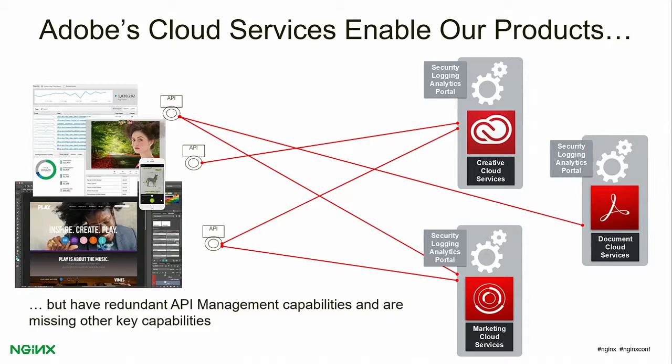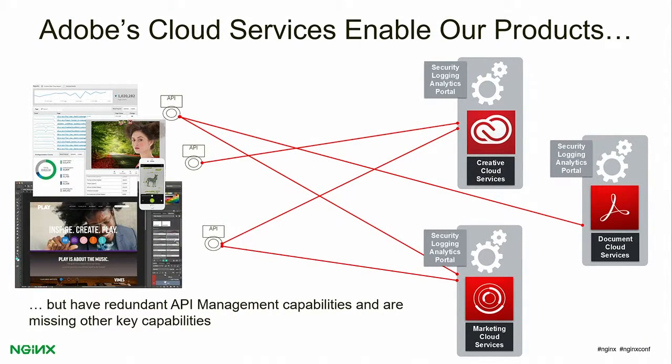My point in showing that video was not to show Photoshop Mix per se, but to show that when you saw it uploading to the cloud, rendering the image and coming back to the user, those are actually API calls that are exposed and managed through our API gateway. That's the value we in the platform enable to our product teams internally — we enable that experience consistently across all of the clouds within Adobe. Adobe has three large clouds: Creative Cloud, Document Cloud, and Marketing Cloud. These have historically been three totally separate clouds, each with their own APIs, their own ways to secure those APIs, logging, analytics, etc.